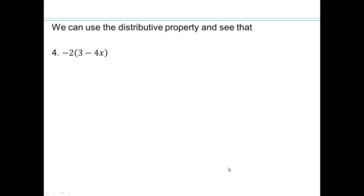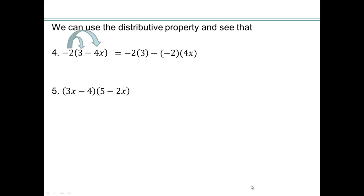All right, go ahead — use the distributive property on your own and see what you can write that as. Then check your answer. So negative 2 times 4x is negative 8x, and the negative of that means additive inverse, which is positive 8x.